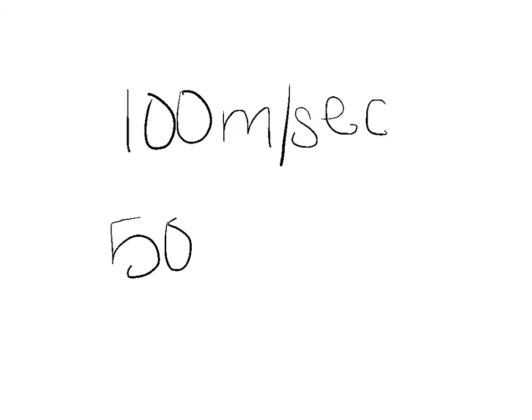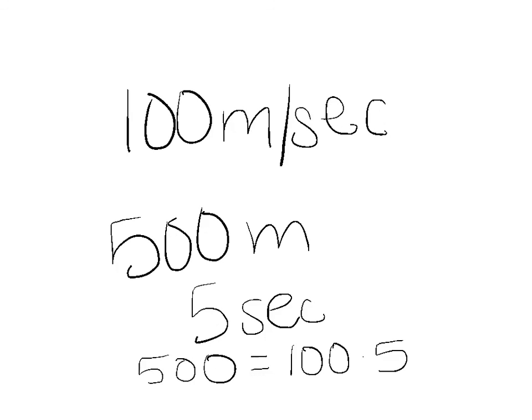Now we have just solved that Brian should drive at a speed of 100 meters per second to travel a distance of 500 meters in 5 seconds. We can verify that: 500 equals 100 times 5.